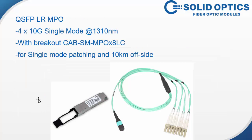This is a QSFP that is not well known. It's an MPO version with LR, so single mode — four times 10 gig single mode at 1310 in a 2 kilometer or 10 kilometer version. You need a breakout cable if you want to use all four lanes: SM MPO to 8x LC. It's ideal if your data center is all single mode, or if you need one of those lines to go 10 kilometers to an off-site location.